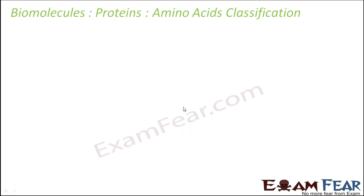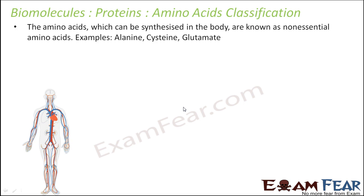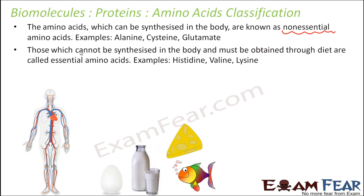There is another way of classifying amino acids. There are two types based upon where they are synthesized — whether they are synthesized inside the body of the living organism or they have to be provided from outside. Based on that, there are two types: non-essential amino acids and essential amino acids. Non-essential amino acids are those which can be synthesized in the body, so you don't really need to provide them from outside. For example, alanine, cysteine, and glutamate are some amino acids which get produced within your body.